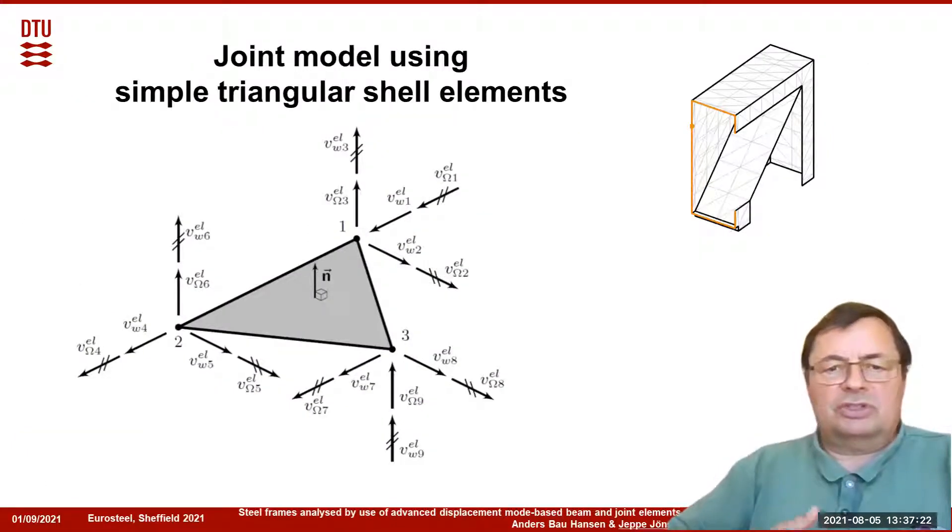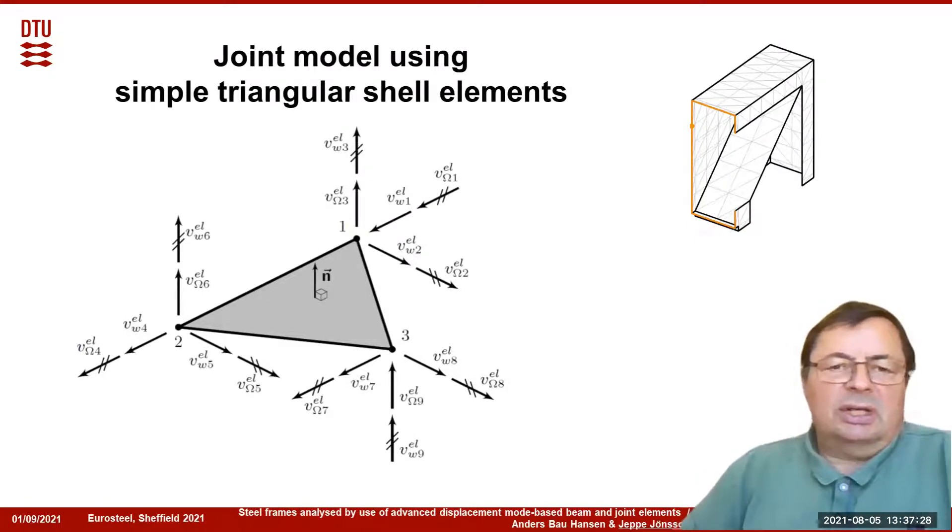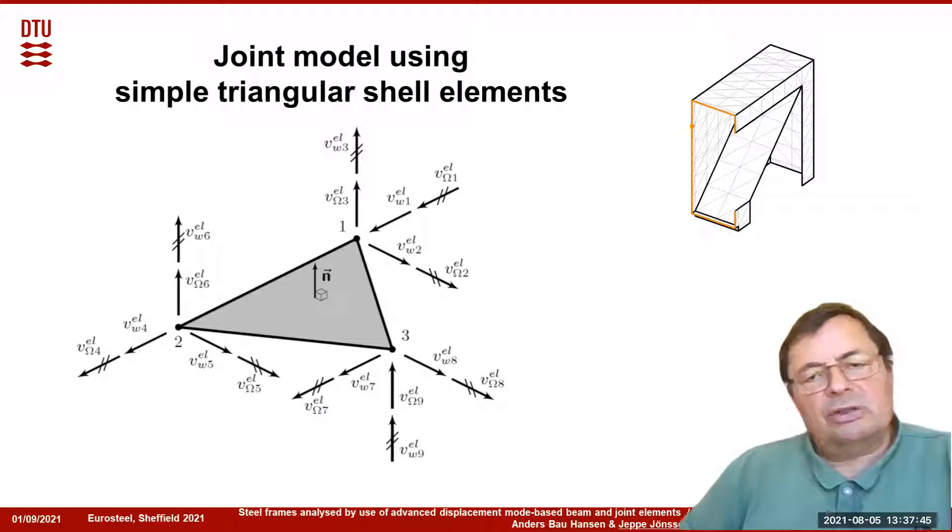So how do we model the joint? We model the joint using triangle elements with six degrees of freedom in each node. It's a constant strain triangle in plane, and more or less constant bending modes for the triangular interface.